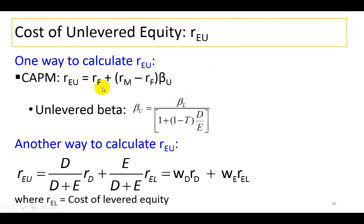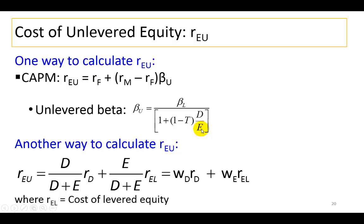To find the cost of unlevered equity, one way is to use the CAPM, in which case we would have to use unlevered beta. Beta would be unlevered using the Hamada formula, where the numerator would be the firm's levered beta, and we divide by a quantity that includes the debt-to-equity ratio as well as the firm's tax rate.